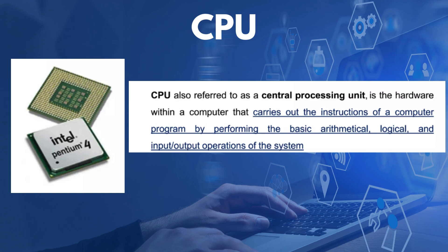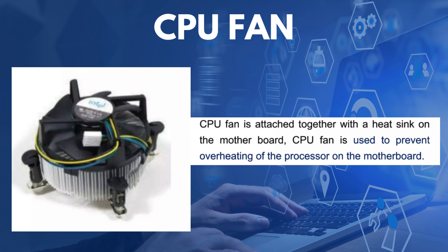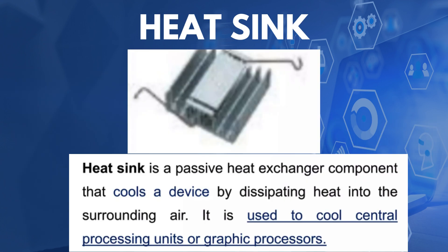The CPU, or central processing unit, is the hardware within the computer that carries out the instructions of a computer program by performing basic arithmetical, logical, and input-output operations. The CPU socket is the mechanical component that provides mechanical and electrical connections between a microprocessor and a printed circuit board (PCB). The CPU fan attaches together with a heatsink on the motherboard and is used to prevent overheating of the processor. The heatsink is a heat exchanger component that cools a device by dissipating heat into the surrounding air, used to cool the CPU or graphics processor.